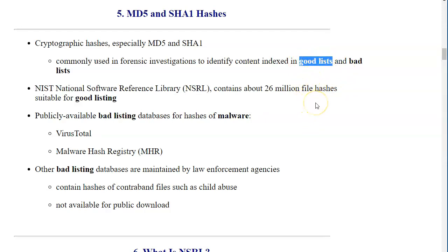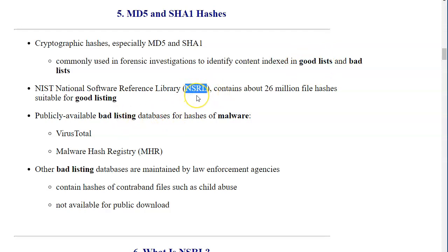The good lists work on the principle that when we know a file is part of an operating system or Microsoft Office 365, we don't have to worry about that component or spend time examining it. We can have a high level of confidence to exclude items present on the good list from our Autopsy case configuration, simply not worrying about or even excluding them from view.